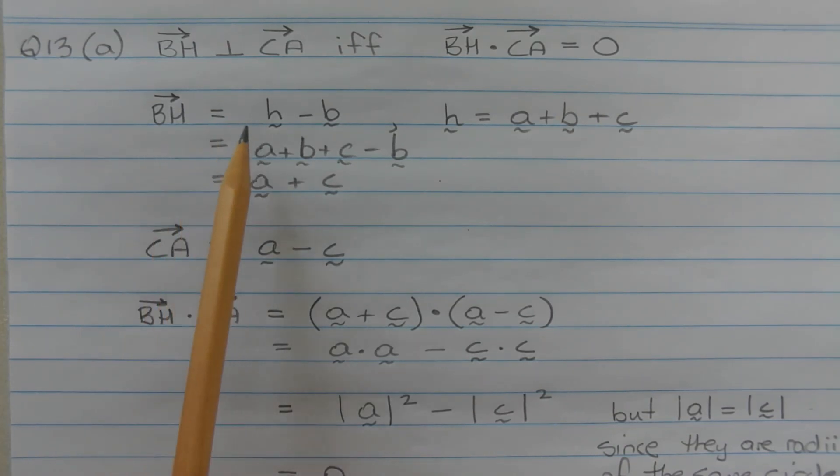Now vector BH is equal to vector H minus vector B where vector H is equal to vector A plus vector B plus vector C. So vector BH is equal to vector A plus vector B plus vector C minus vector B. So this plus B minus B will cancel.